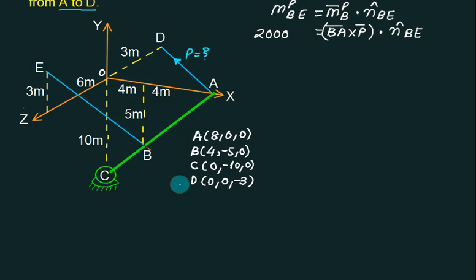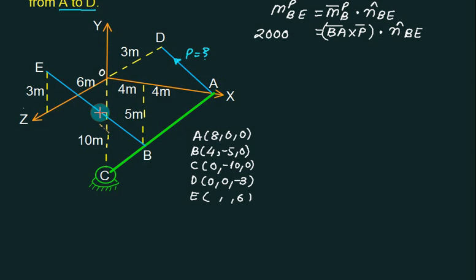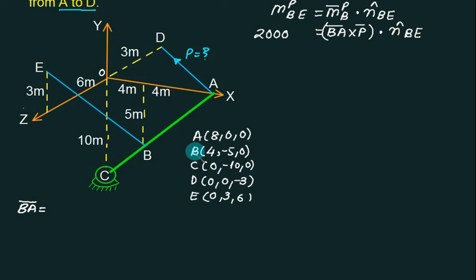Coordinate of E: traveling 6 along z-axis, then along y to reach the point, giving E equals 0, 3, 6 approximately. Vector BA equals coordinate of A minus coordinate of B: 8 minus 4 gives 4i; 0 minus minus 5 gives plus 5j; 0 minus 0 gives 0k. So BA equals 4i plus 5j.